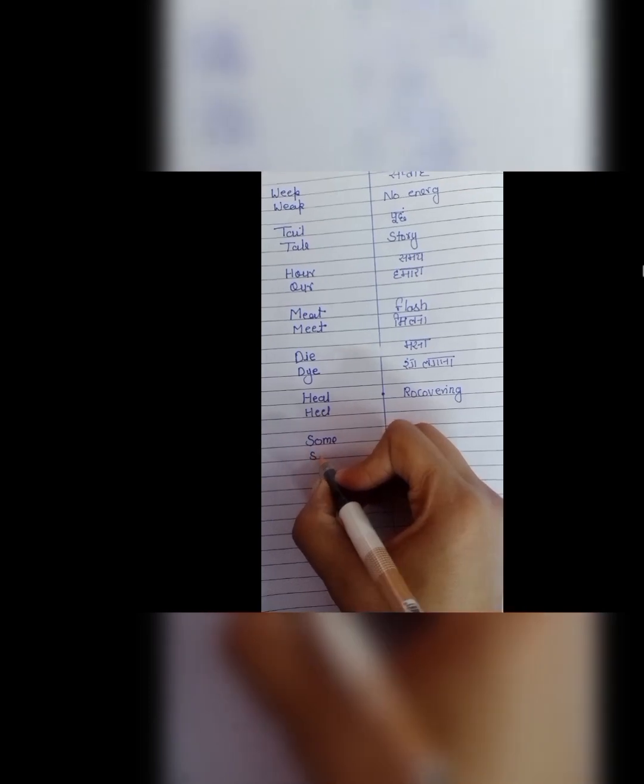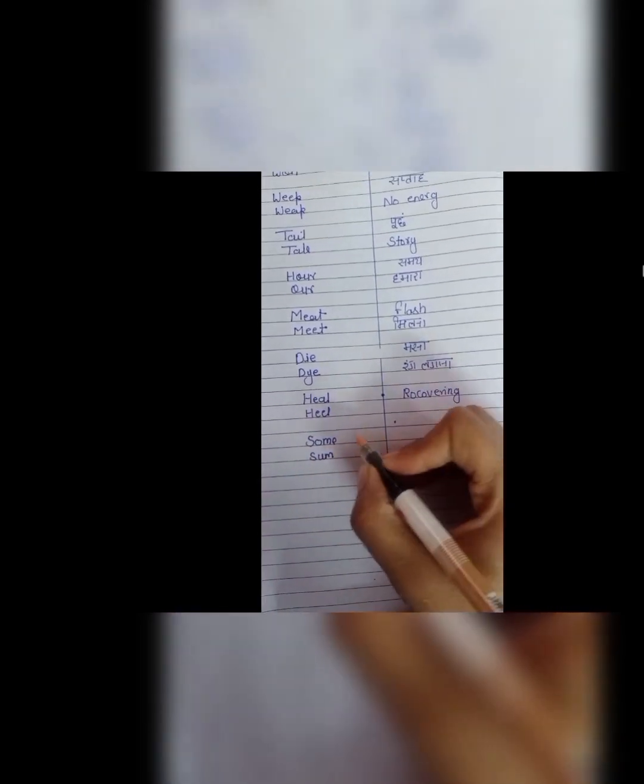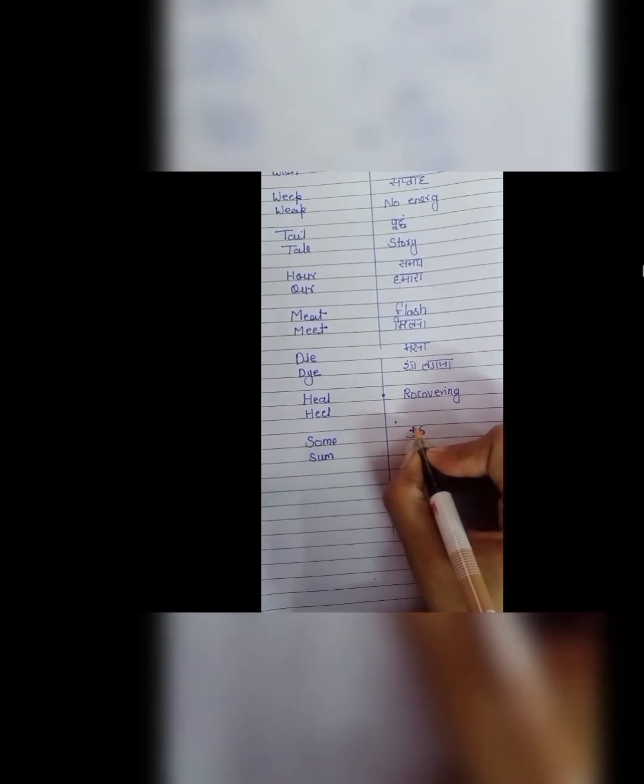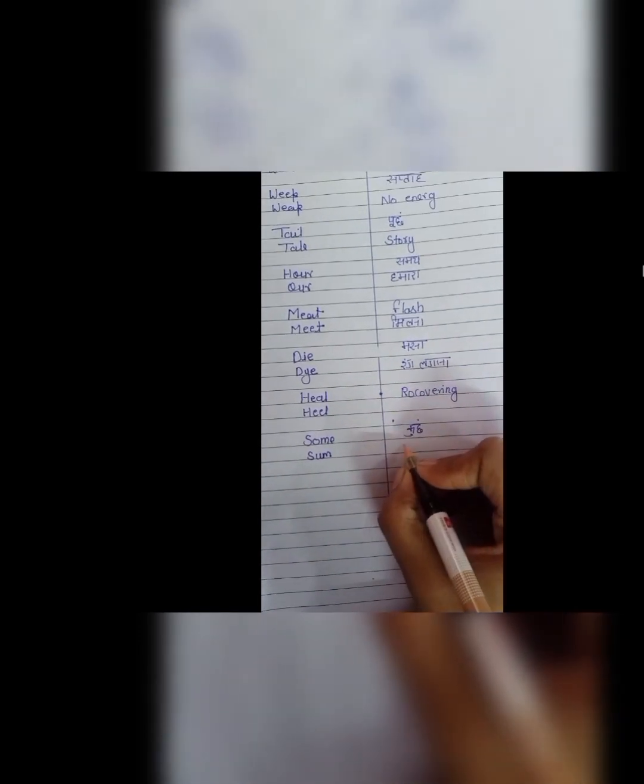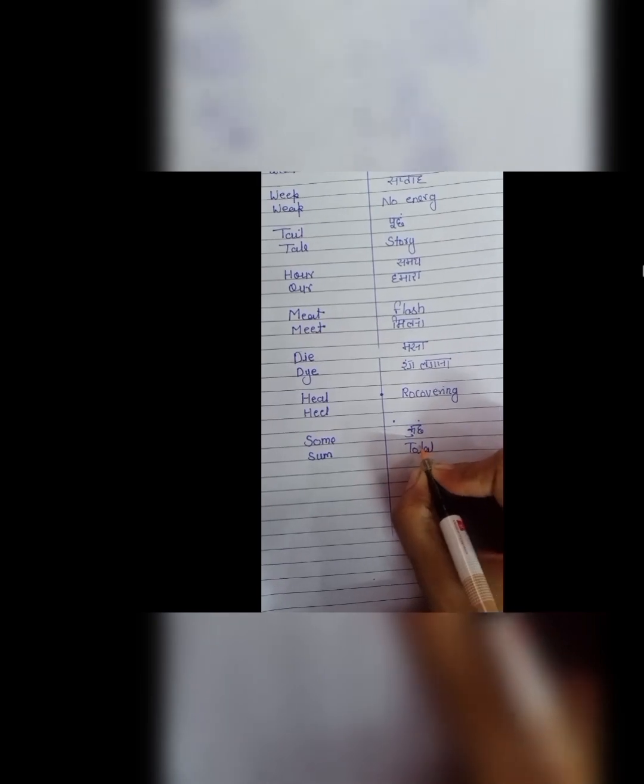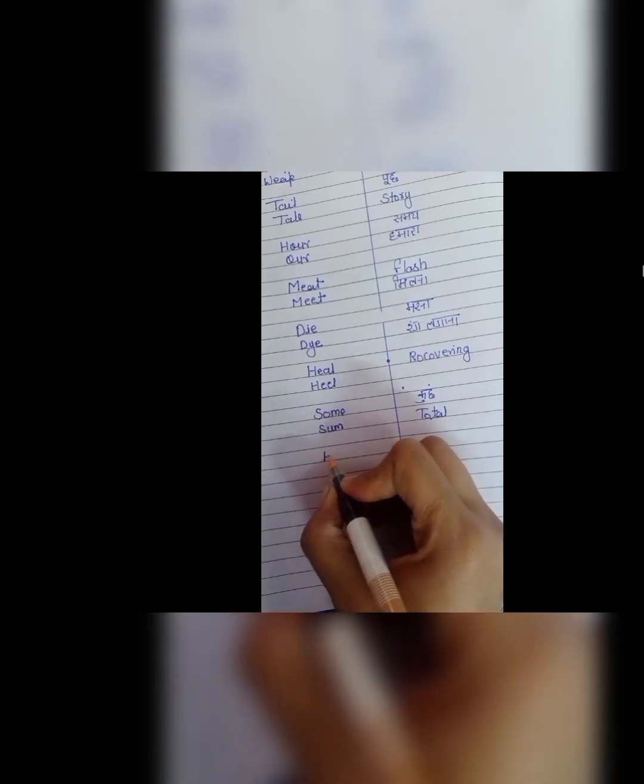Next is some and sum. S, O, M, E, some means I have something. And S, U, M, sum means total. Matlab kisi chiz ka total.